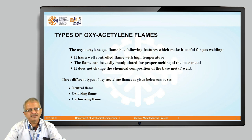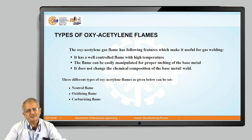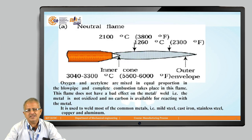Coming to the next part — the types of oxy-acetylene flame. The oxy-acetylene gas flame has a well-controlled flame with a high temperature. The welder has control over that flame and it can be easily manipulated for melting the base metal, depending on the type of metal being processed. It does not change the chemical composition of the base metal. In oxy-acetylene gas welding, three different types of flames are possible: the neutral flame, the oxidizing flame, and the carburizing flame.